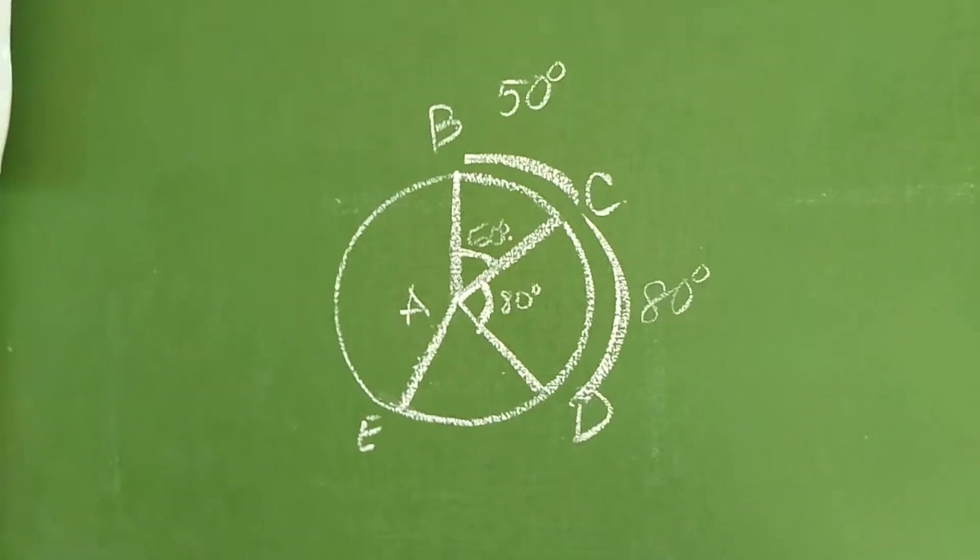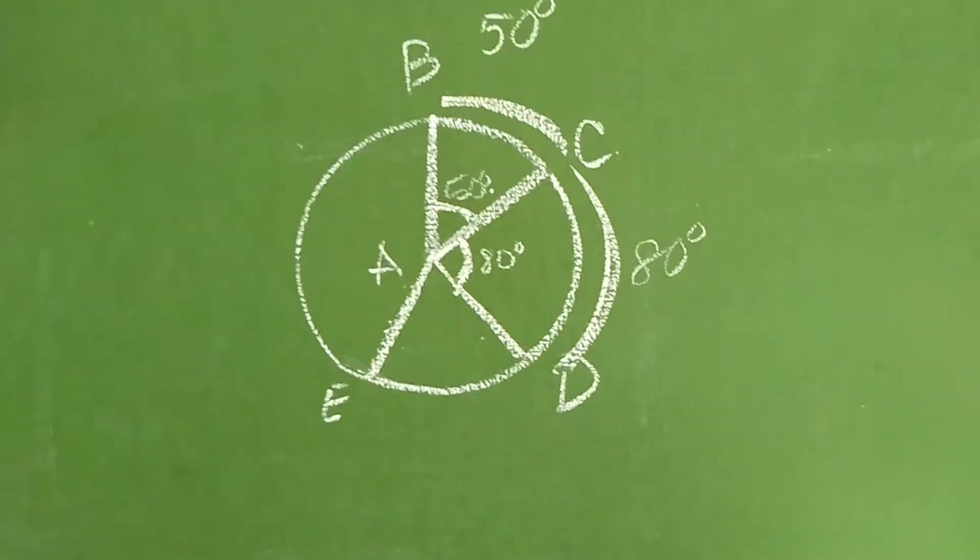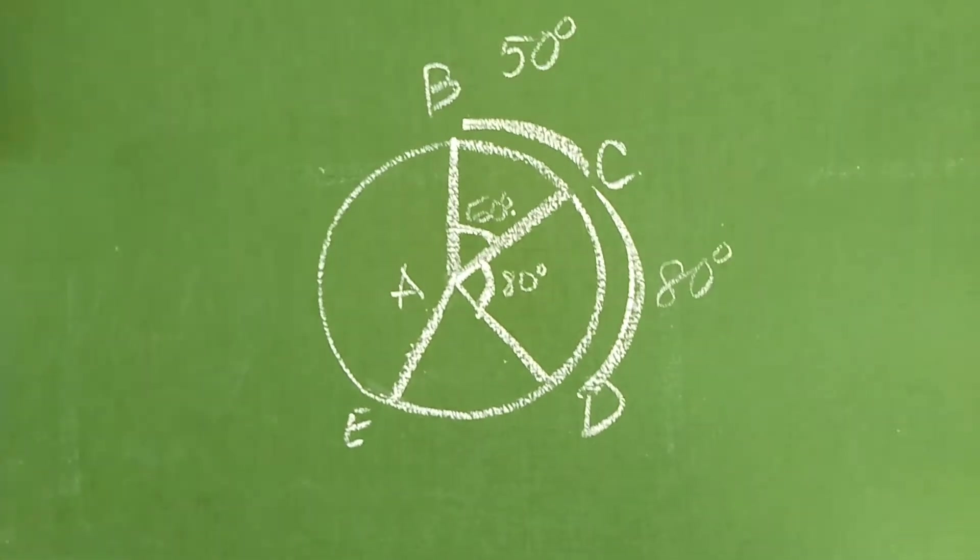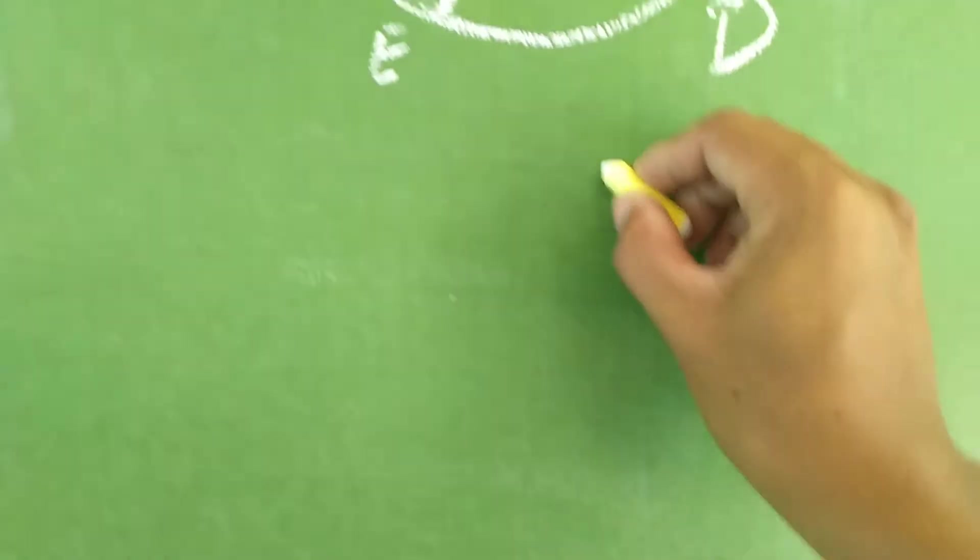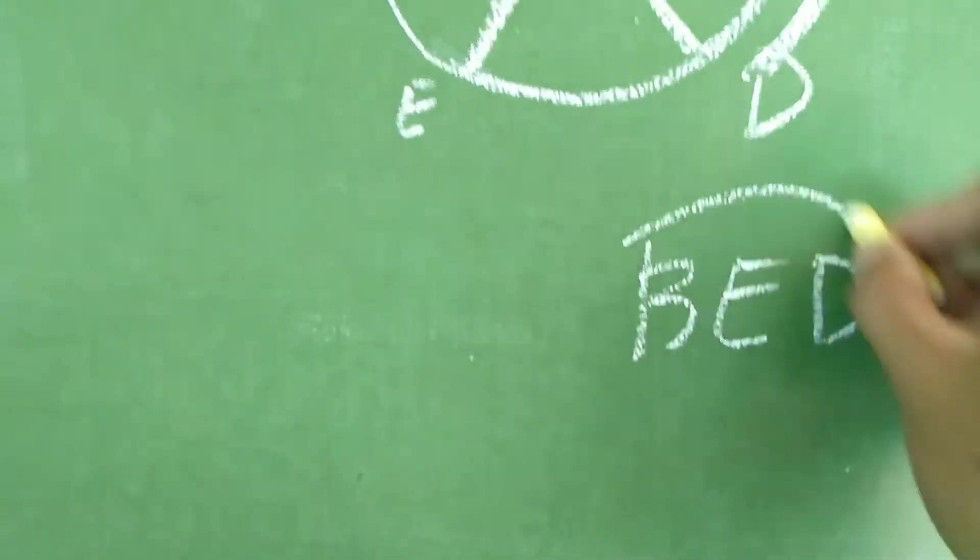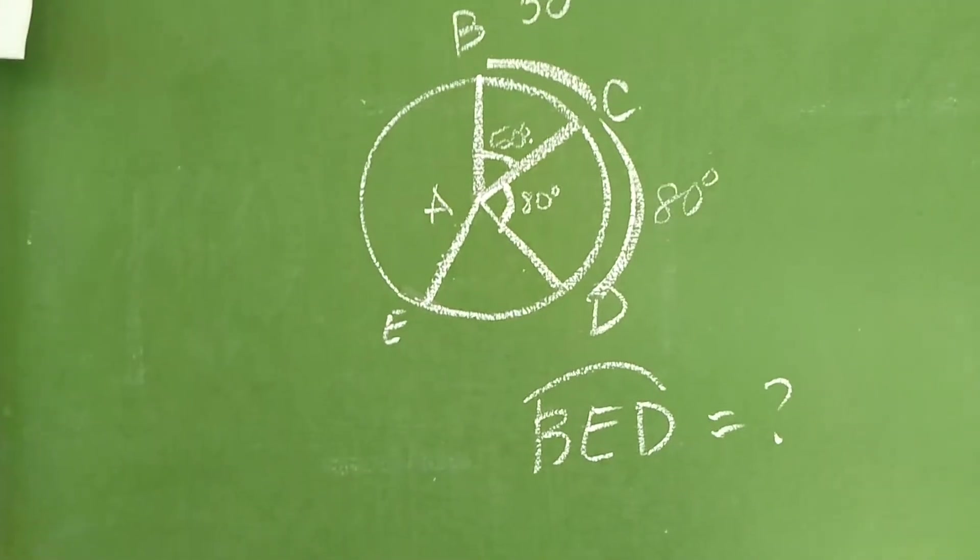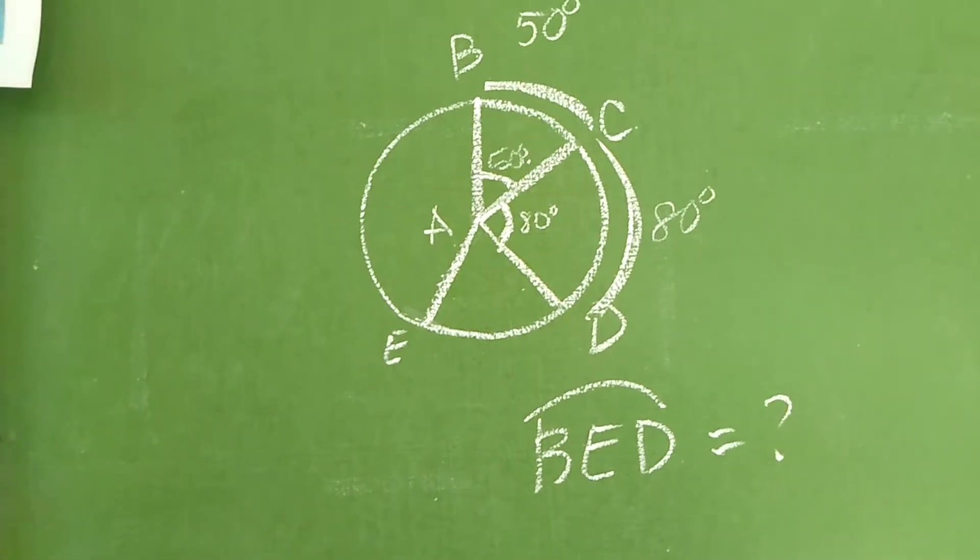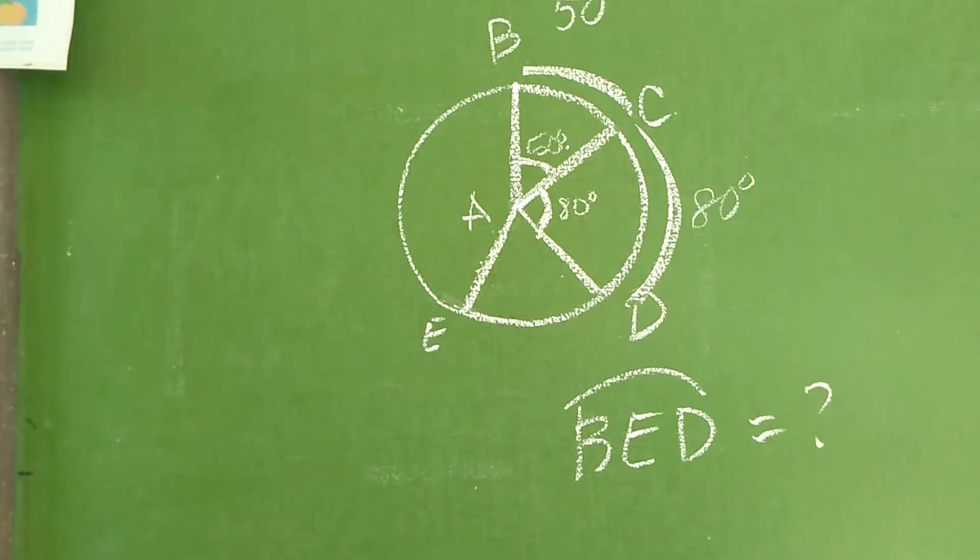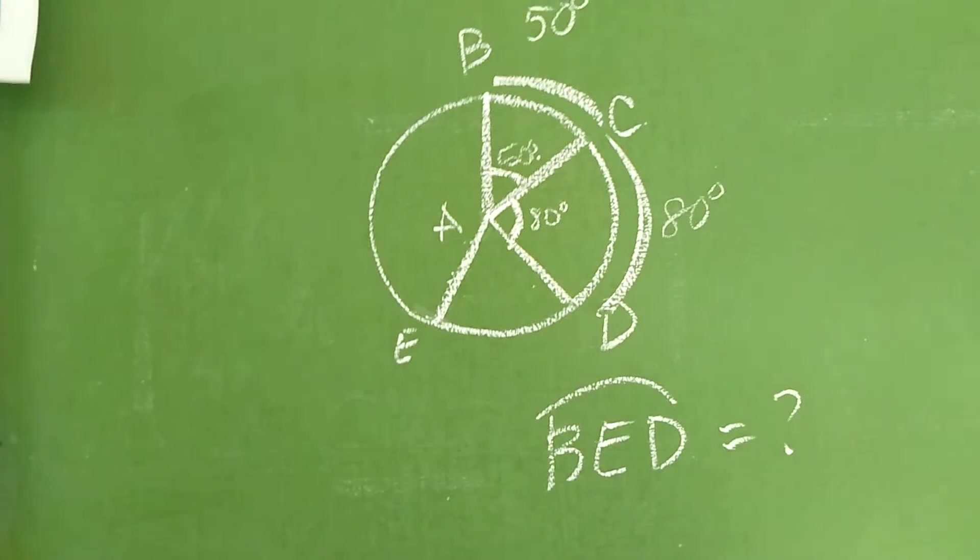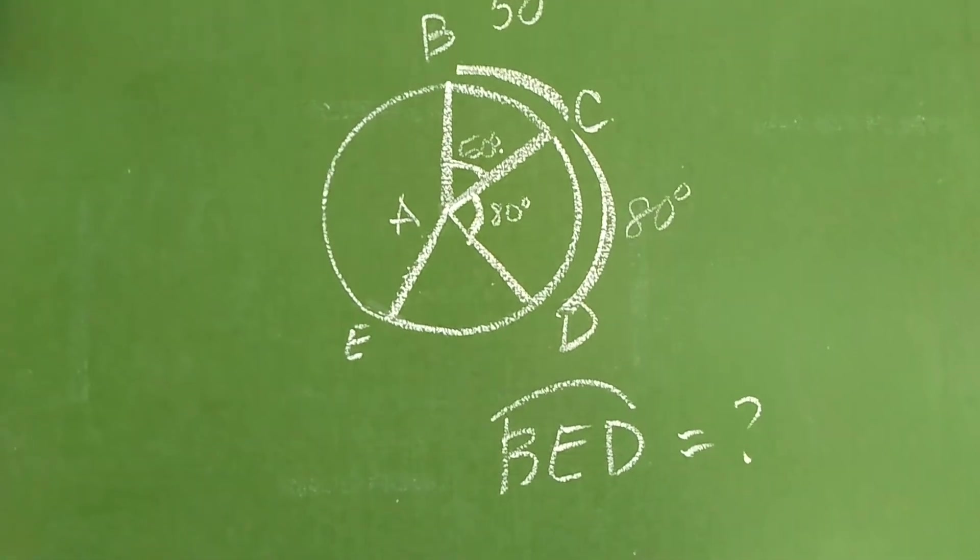So, next, given again this example, hahanapin daw natin ang Arc B, E, D. Arc B, E, D. Okay? What is the measurement of the B, E, D? Arc B, E, D. Okay. Ngayon, anong gagawin natin ngayon dito? Okay? So, since wala po tayong mayaad, gagawan po natin ng paraan yun. The thing there is, we are going to subtract it from what?